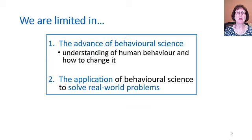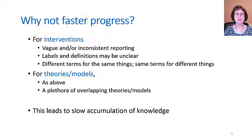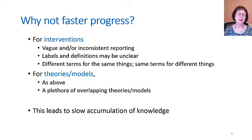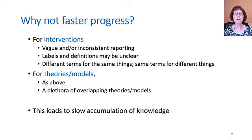We're limited in the advance of behavioural science — that is, understanding human behaviour and how to change it — and we're also limited in the application of behavioural science to solve real world problems. Why haven't we made faster progress? For interventions, describing them and reporting them, we have vague and inconsistent reporting. Labels and definitions may be unclear, with different terms often used for the same things or the same terms for different things. And when it comes to our theories and models, we have the same problem, plus a plethora of overlapping theories and models. All of this leads to slow accumulation of knowledge.